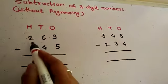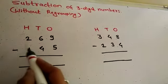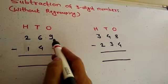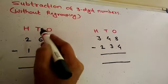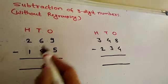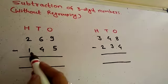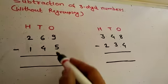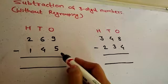First example: 269 minus 145. 269 is 2 hundreds, 6 tens, 9 ones. 145 is 1 hundred, 4 tens, 5 ones. Let's first subtract the ones.